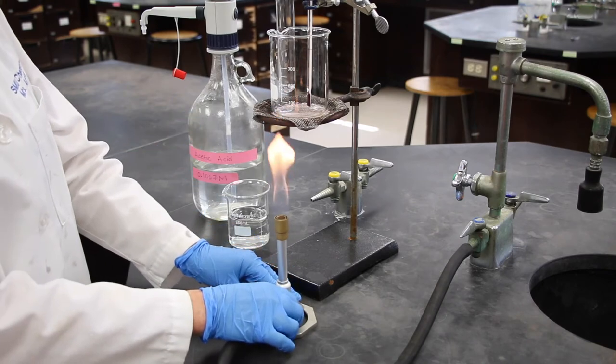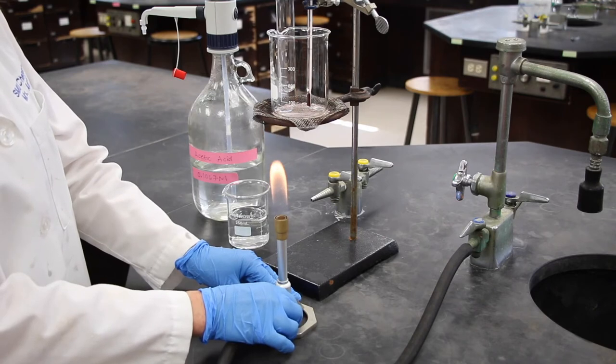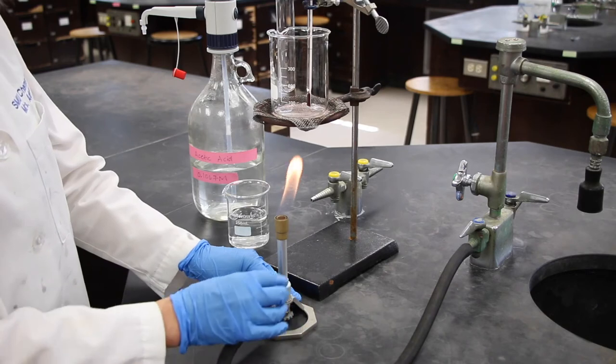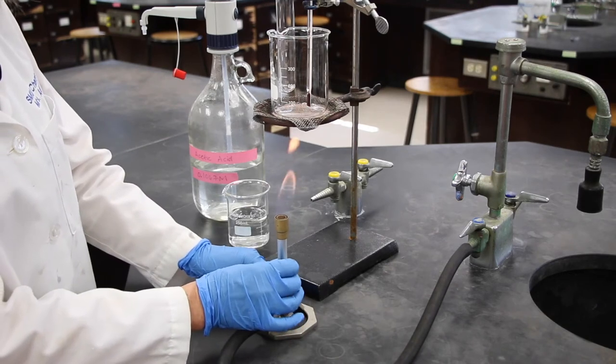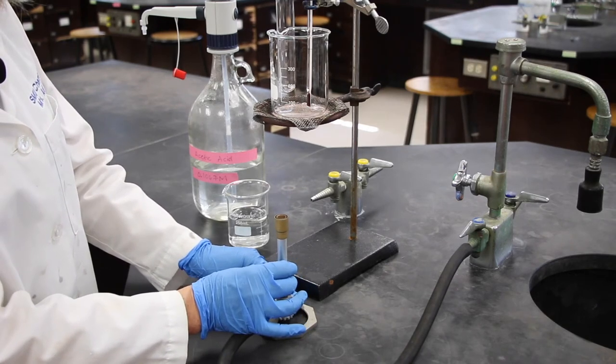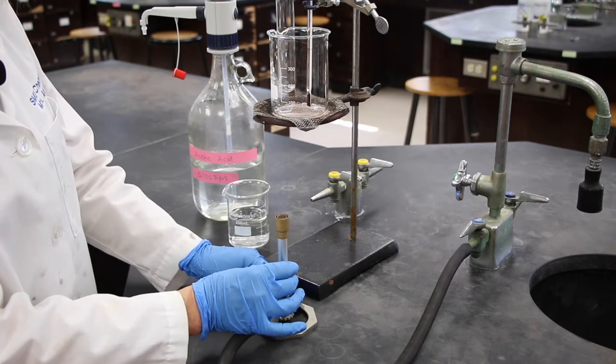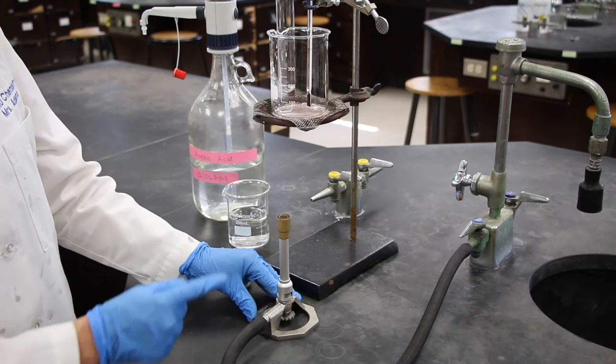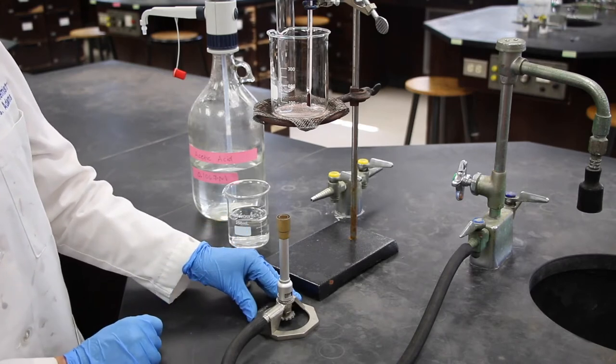So the first thing we're going to do is we're going to adjust the height of the flame, and that seems to be a pretty good height. And then we'll turn the barrel, giving it a little bit more oxygen, until we have a large blue flame with a blue cone inside.